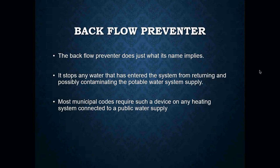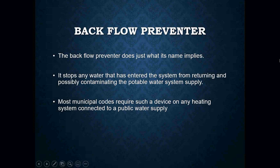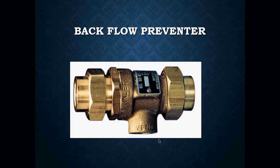The backflow preventer does exactly what the name implies — it prevents water from back-flowing. It stops water entering the system from returning and possibly contaminating potable water or the potable water supply system. Most municipal codes require such a device on any heating system connected to a public water supply. They must be installed in the direction of water flow — there is an arrow stamped on the brass.